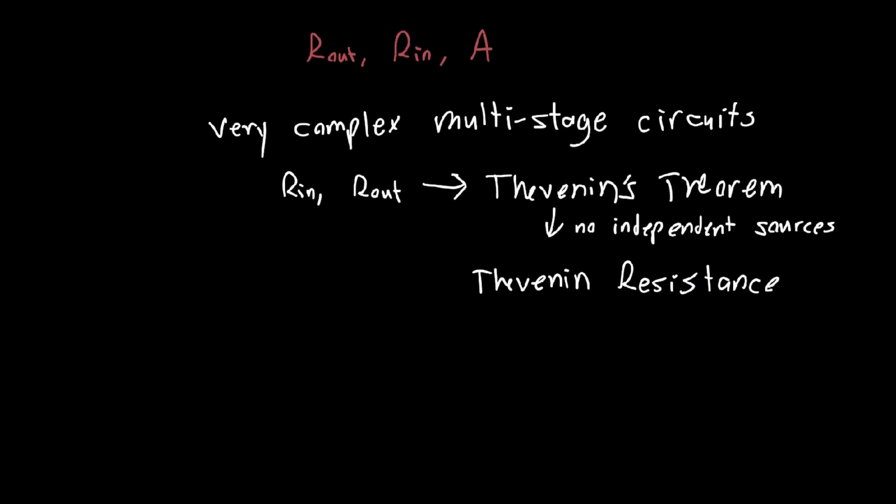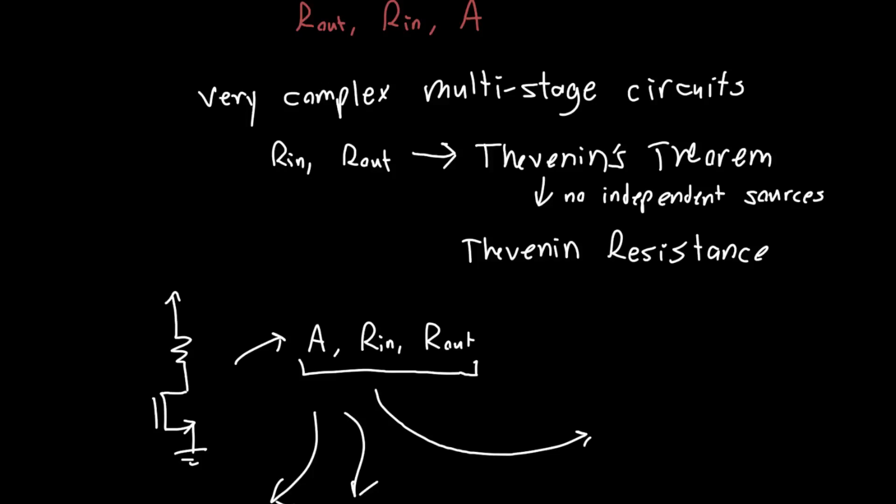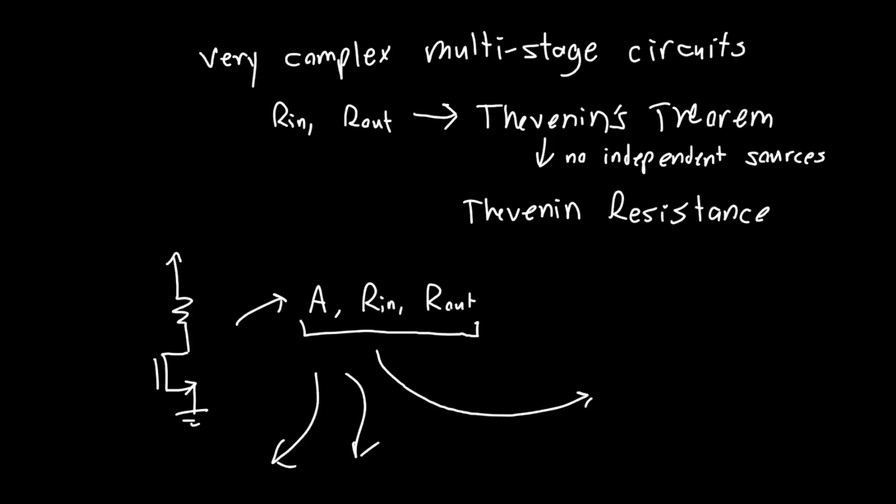And so in summary, I've just described a general method. We haven't actually done any examples and I'll show you one in a future video, but we have a general idea that if you've got some circuit, you can characterize it with three different parameters: its gain, its input resistance, and its output resistance. And then you can use these three parameters to figure out how this circuit interacts with any other circuit. So in the next video I'll do an example just to make this more concrete. And I hope you enjoyed the video. If you have any questions or comments, please feel free to post them down below, and I'll see you next time.